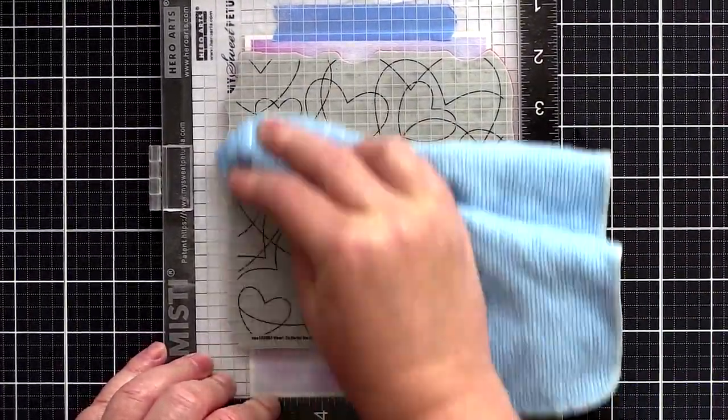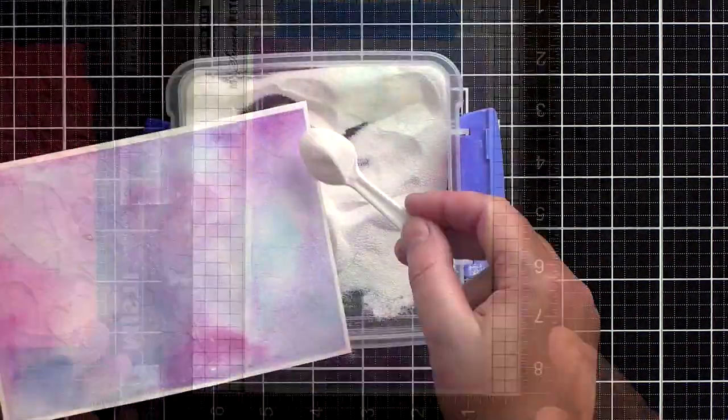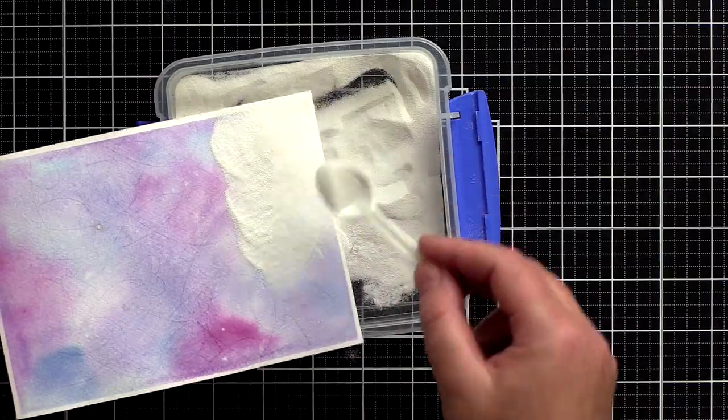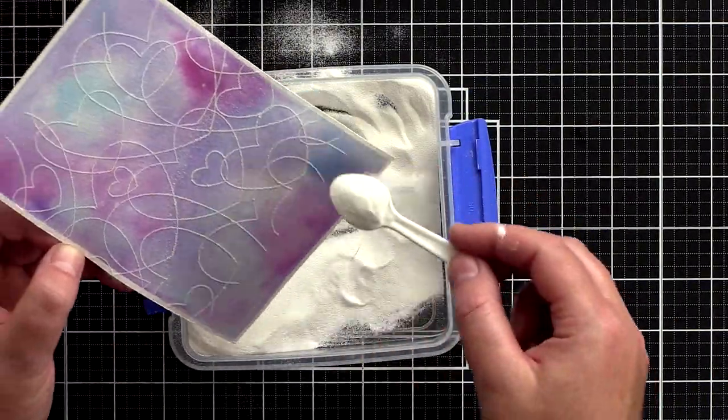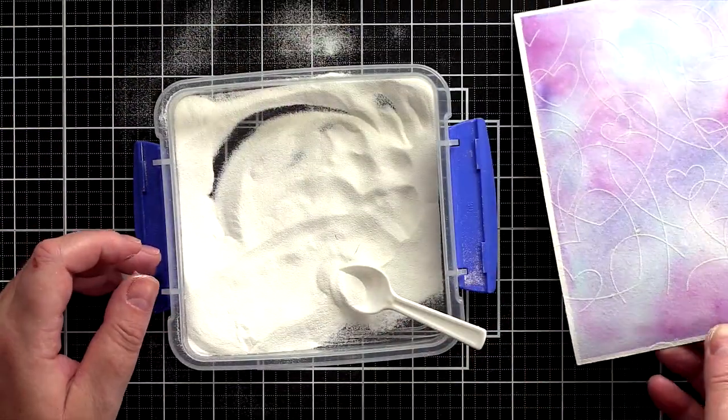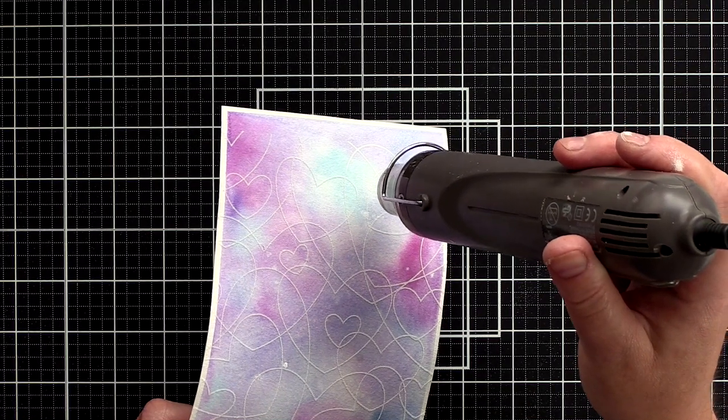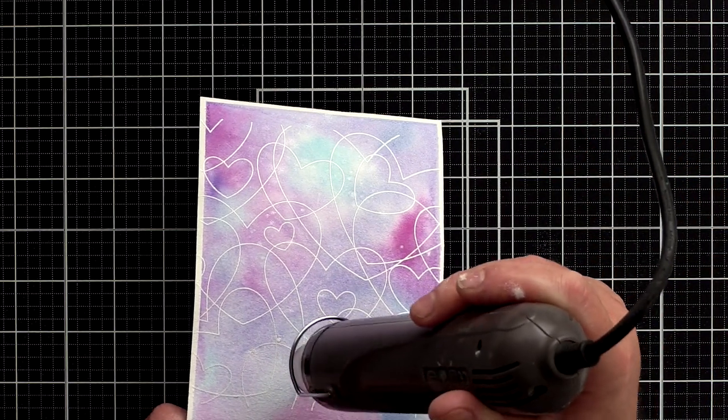This way the resulting emboss lines will be as delicate as they are intended to be rather than heavy and squished out by too much pressure. I sprinkle the card with white embossing powder from Simon Says Stamp making sure to cover the whole area and then gave it a good tap off before using a heat tool to melt the embossing powder.